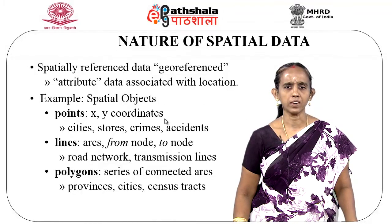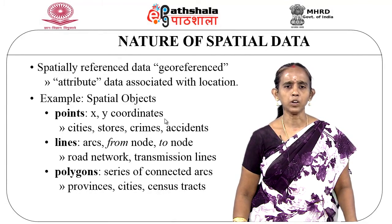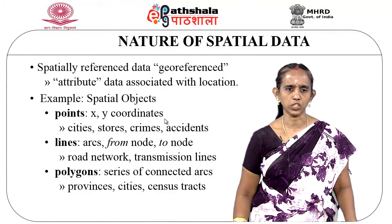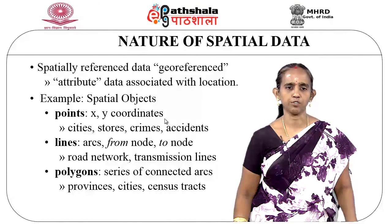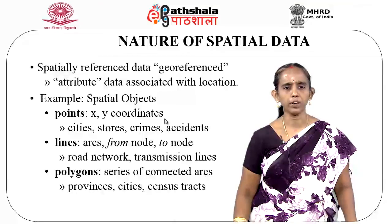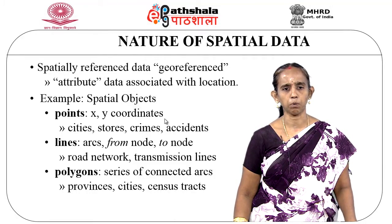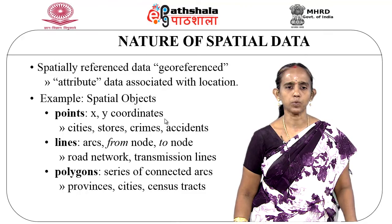If we look at the nature of this kind of spatial data, they are usually spatially referenced data, also called geo-referenced data. The attribute data is associated with the location. Examples of such data are related to spatial objects. These kinds of data can be represented in the form of points, which usually have x and y coordinates associated with them. Using these points it is possible to plot data such as cities, stores, crimes, or accidents.